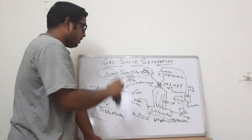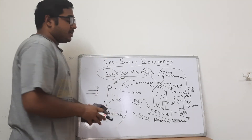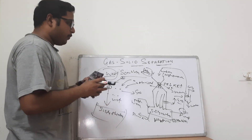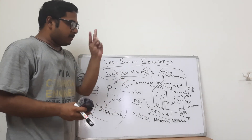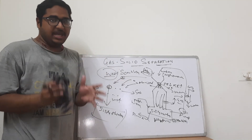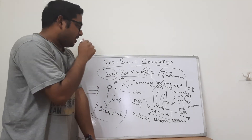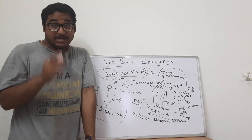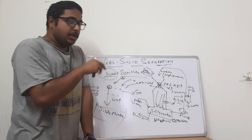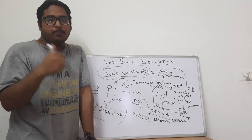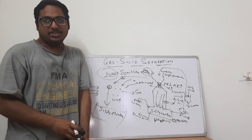So you have understood the principle of electrostatic precipitators and the principle of wet scrubbing system. Gas-solid and gas-liquid separation are done by four popular methods — two discussed in the previous video and two discussed today. Hope this helps. If you like it, please like, subscribe to our channel, and hit the bell icon to get regular updates. Thank you very much.